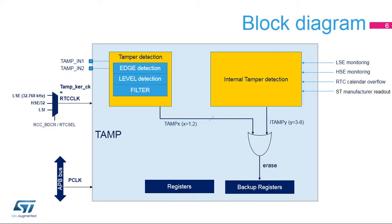Here's the TAMP clock diagram. The TAMP has two clock sources. The TAMP clock, named RTC clock, is only used for tamper detection in level detection mode with filtering, and the APB clock is used for TAMP and backup registers read and write accesses. Tamper edge detection or internal tamper detection do not need any clock. The TAMP clock can use either the high-speed external oscillator divided by 32 (HSE), the low-speed external oscillator (LSE), or the low-speed internal oscillator (LSI). Only LSE or LSI are functional in stop and standby modes.